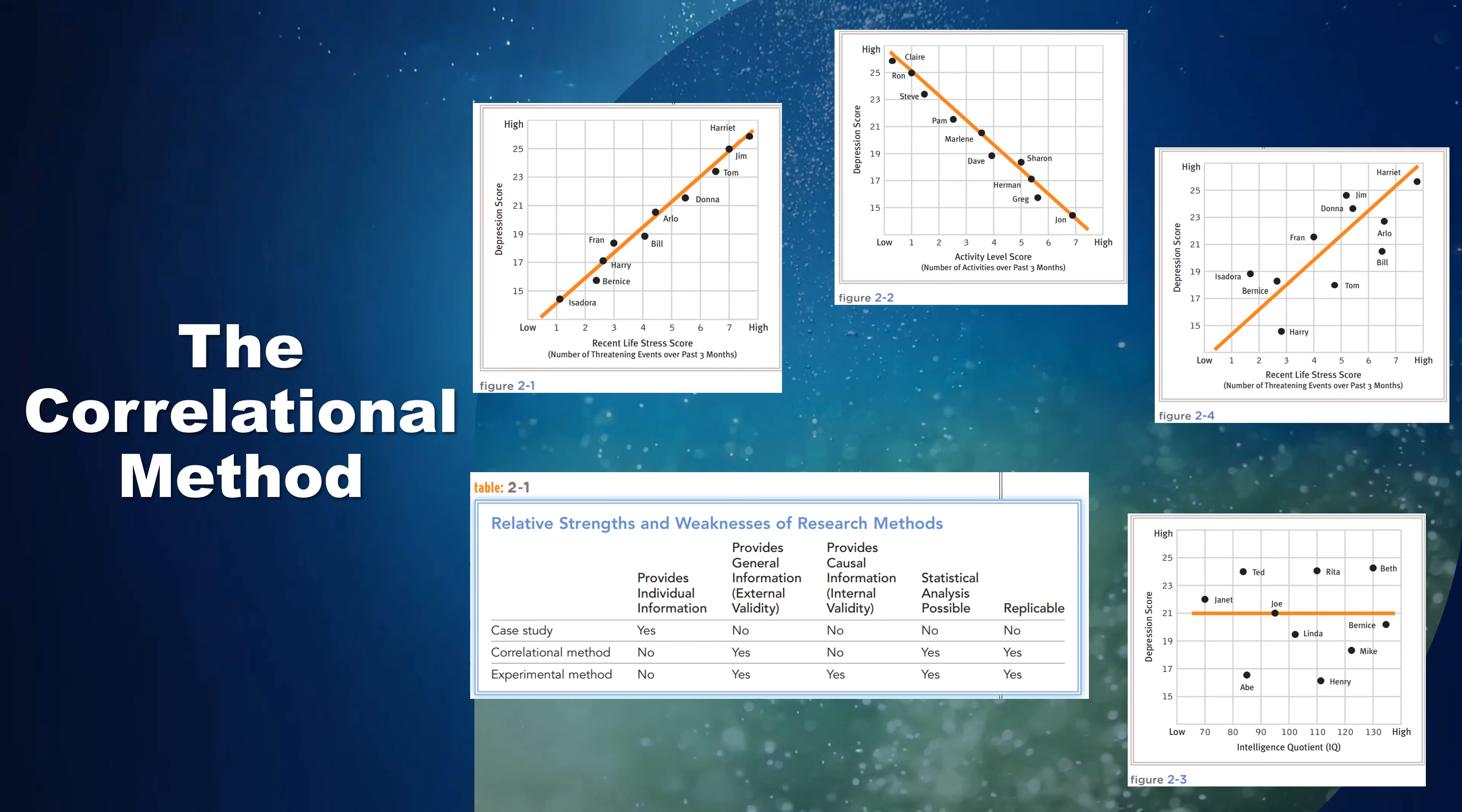Describing a correlation. Suppose you were to use the correlational method to conduct a study of depression. You would collect life stress scores and depression scores for ten people and plot the scores on a graph. As you can see, the participant named Jim has a recent life stress score of seven, meaning seven threatening events over the past three months; he also has a depression score of 25. Thus he is located at the point on the graph where these two scores meet.